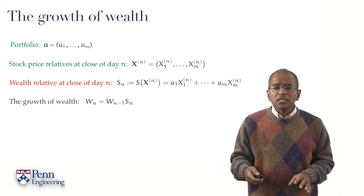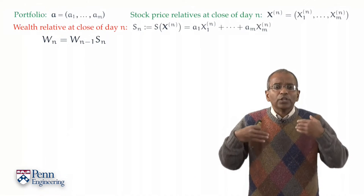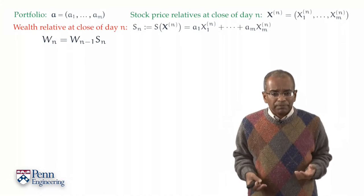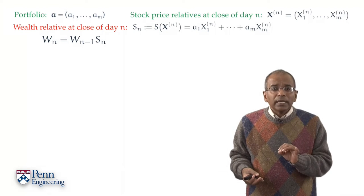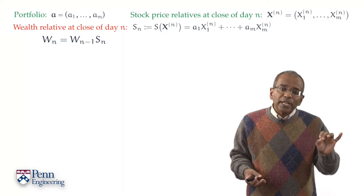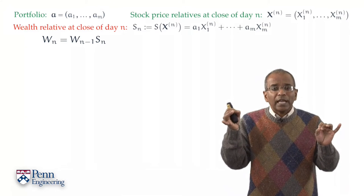So we begin the analysis by setting up a simple inductive step and we try to work it through step by step. We know what the wealth is at the close of trading on day n in terms of the wealth at the close of trading on day n minus 1.